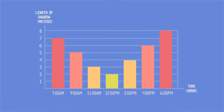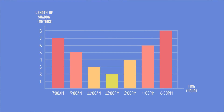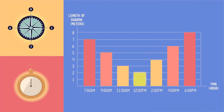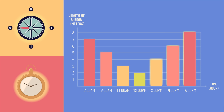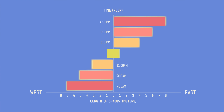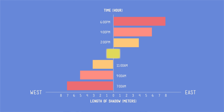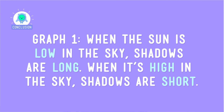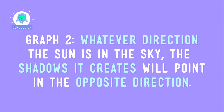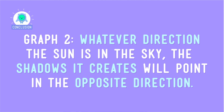So what patterns did we see the lamppost shadow follow? Let's look at these two bar graphs that recorded our observations. In the first graph, we've charted the length of the lamppost shadows. The Sun created long shadows in the morning when it was rising in the east. When it was almost directly overhead at noon, the shadows were shorter. Then, as the Sun set in the west in the afternoon, the shadows got longer again. The second graph shows that shadows in the morning and afternoon face two different directions, and the midday shadow was somewhere in between. When the Sun is low in the sky, shadows are long. When it's high in the sky, shadows are short. And whatever direction the Sun is in the sky, the shadows it creates will point in the opposite direction.